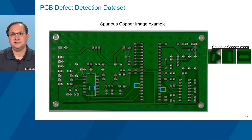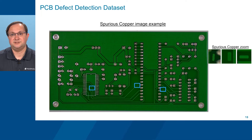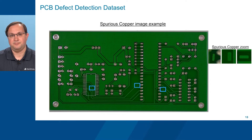The dataset's sixth defect class is spurious copper, which is an isolated region of copper in a place not intended by design. Such spurious conductive material can cause electrical failure in nearby connections. You can see several examples of spurious copper ROIs annotated in blue.